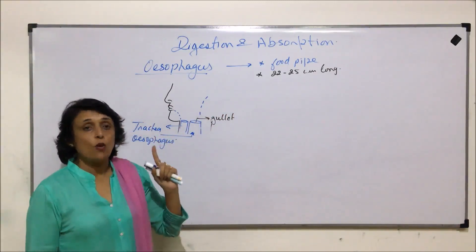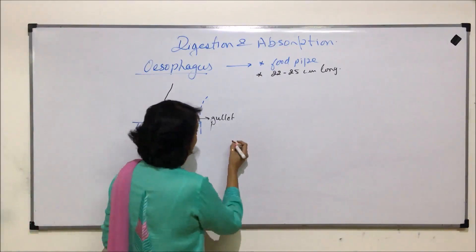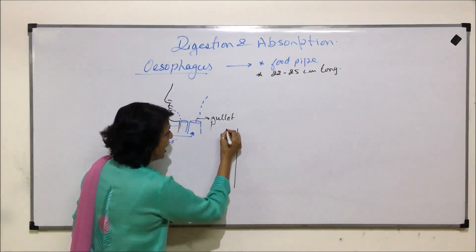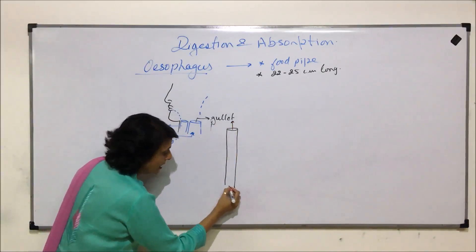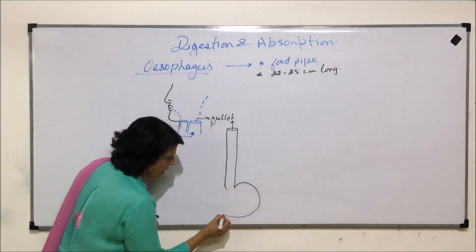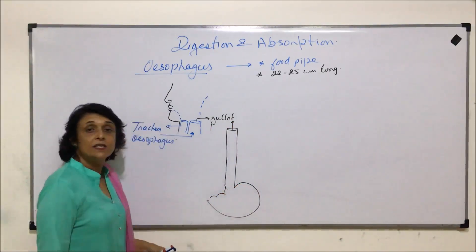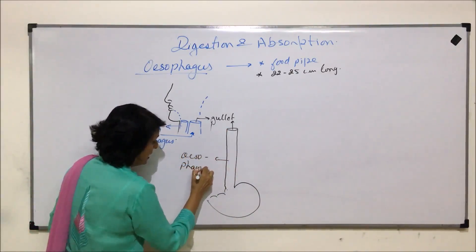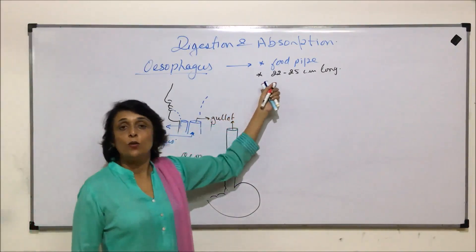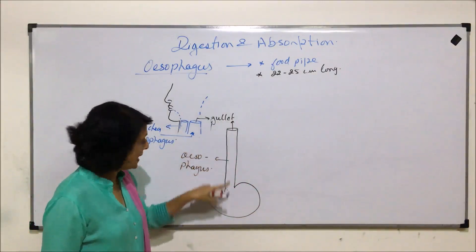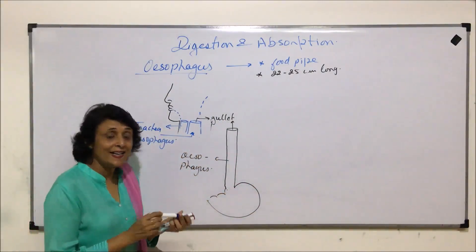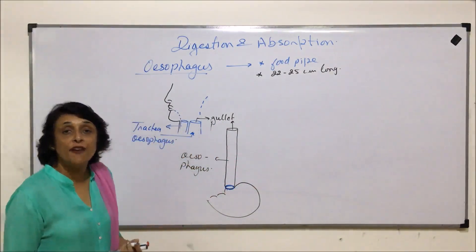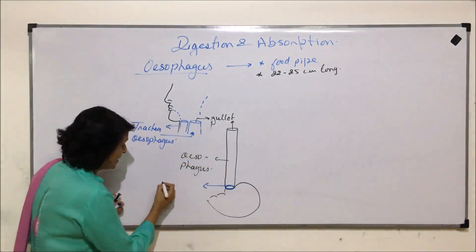One opening is called the gullet and the other opening leads into the stomach. If you are drawing the esophagus, the upper opening is the gullet, and it opens into the bag-like structure that is the stomach. The lower opening is guarded by a circular muscle called a sphincter, and this sphincter is called the cardiac sphincter.